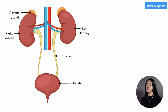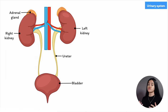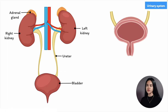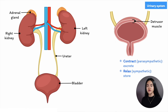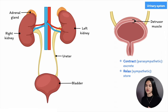Ureters transport urine from the kidney to the urinary bladder, which is found in the pelvic cavity. It's a smooth muscle-walled sac that stores urine. The walls of the bladder are made up of the detrusor muscle, a smooth muscle that allows the bladder to contract to excrete urine or relax to store it. The sympathetic relaxes the detrusor muscle to hold urine, and the parasympathetic contracts it causing urination — think 'para makes you pee.'